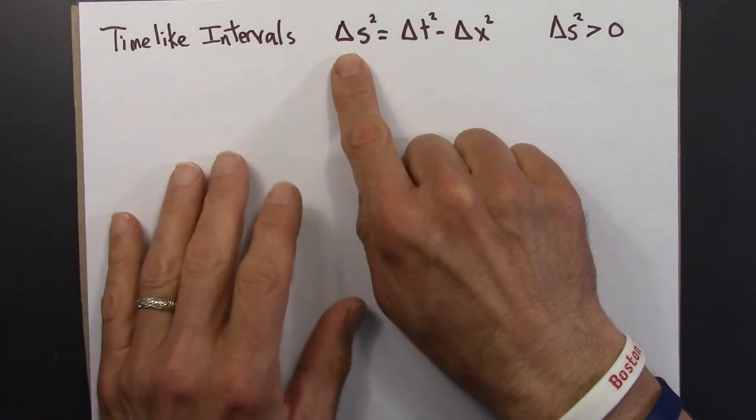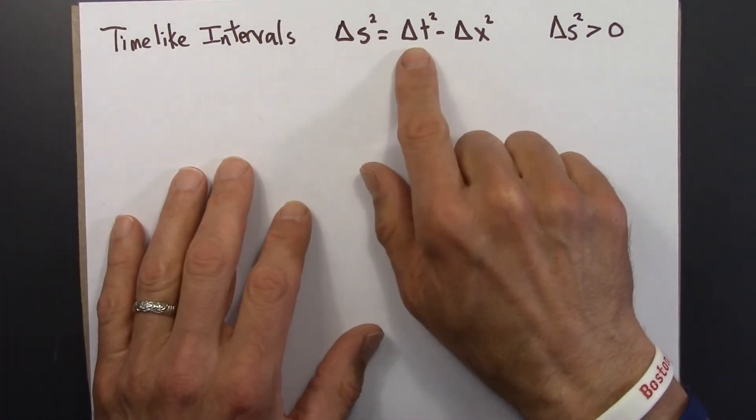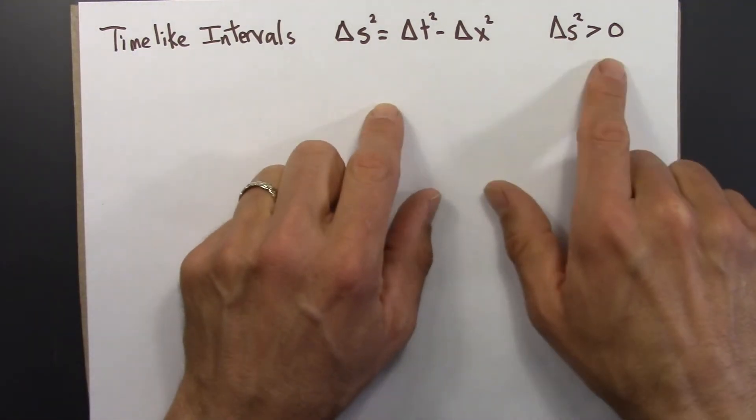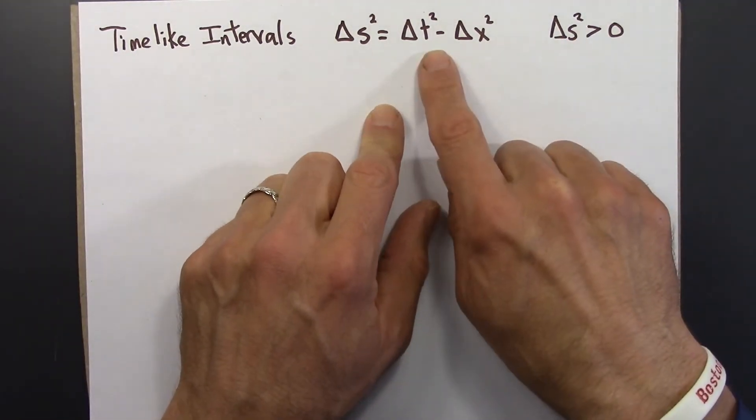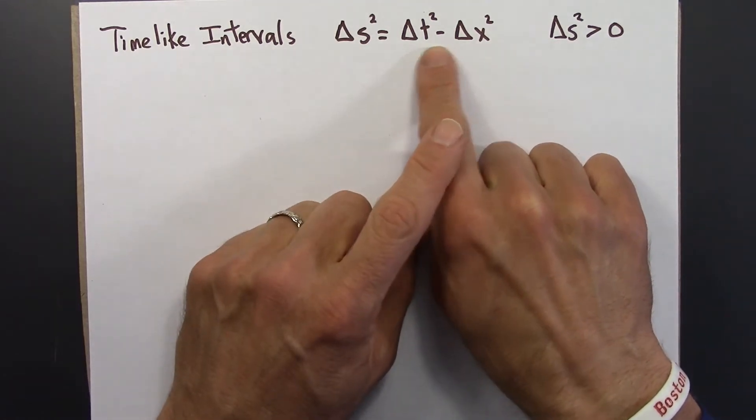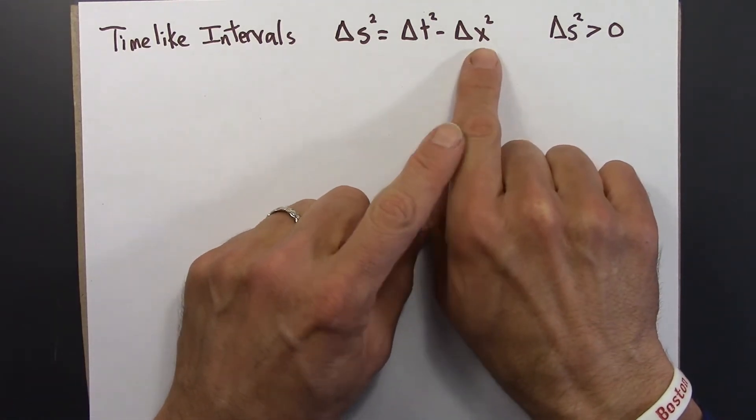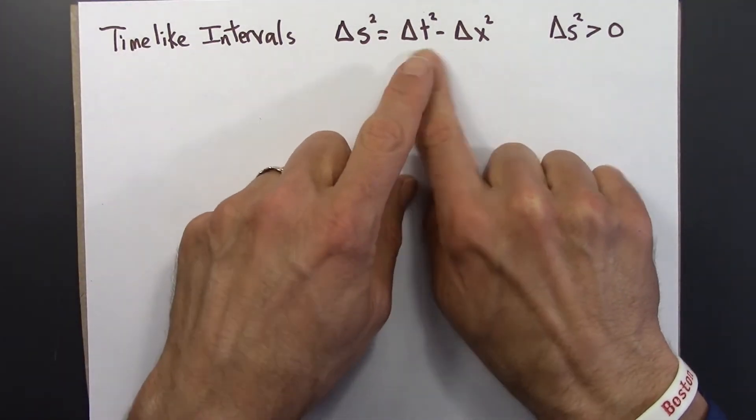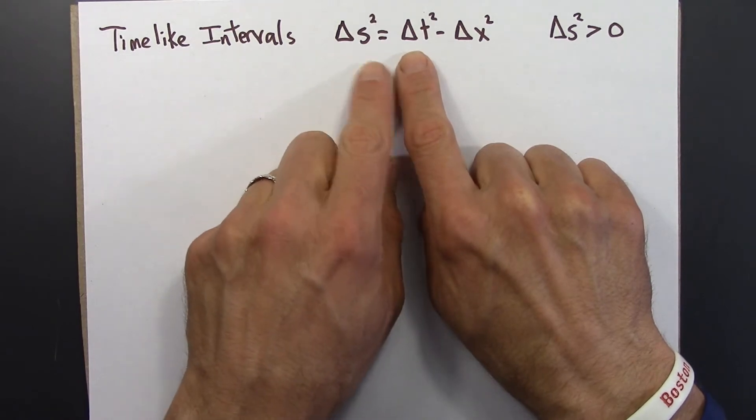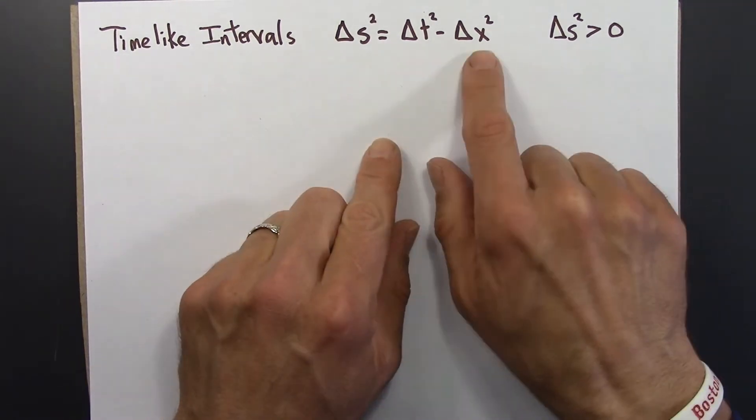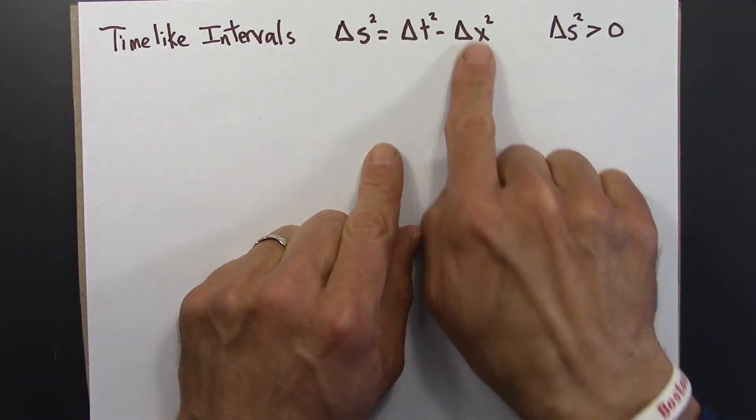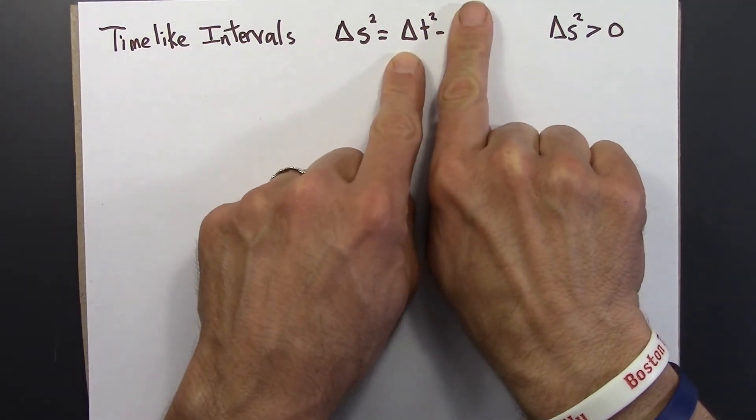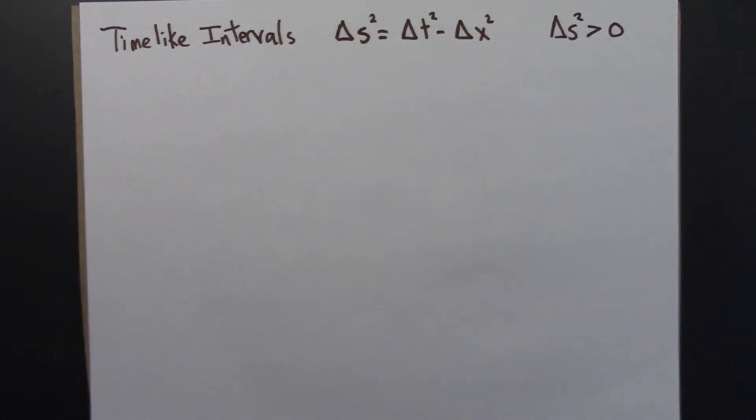A reminder of the metric equation: delta s squared equals delta t squared minus delta x squared. If this is going to be positive, that means delta t squared has to be larger than delta x squared. One way we could get a positive number would be if delta x is zero. If that's zero, then this squared is certainly positive.